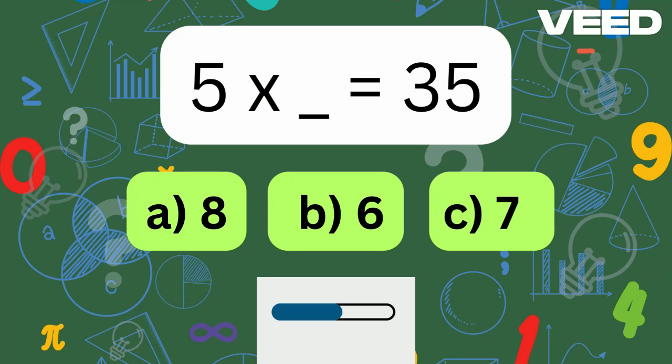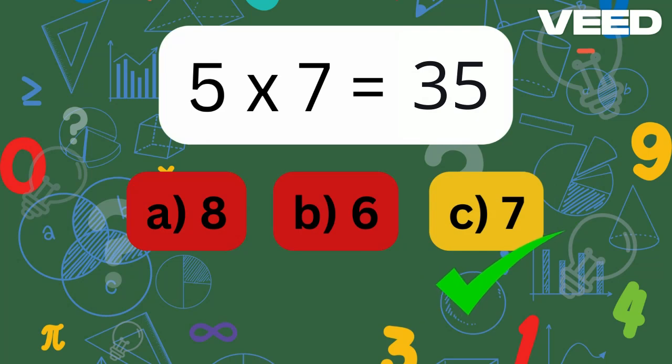5 times what equals 35? That's right, 5 times 7 is 35.